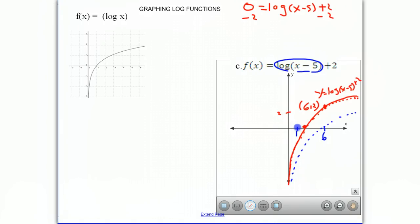So we go 0 is equal to the log of x minus 5 plus 2, subtract 2, subtract 2. We get negative 2 is equal to the log of x minus 5. And using our rules for logs, we know that this is the same thing as the exponential function. 10 to the negative 2 is equal to x minus 5.